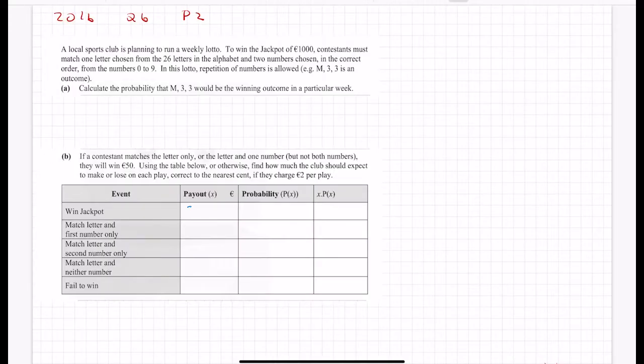2016, there was a probability question on paper 2 question 6 that dealt with a lotto and in essence was working out the expected value. A local sports club is planning to run a weekly lotto. To win the jackpot of a thousand euros contestants must match one letter from the 26 letters in the alphabet and two numbers chosen. Two numbers, one letter.